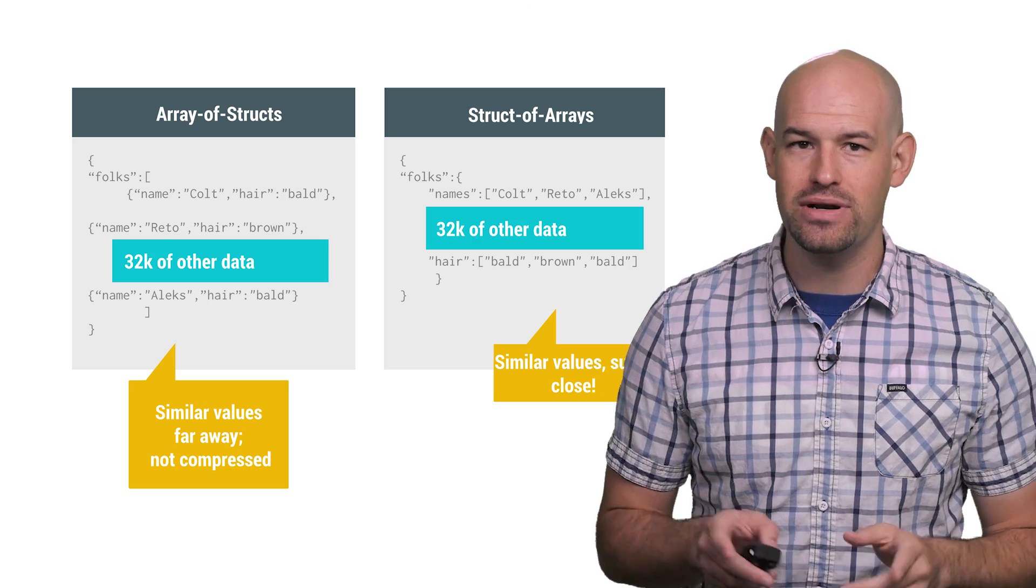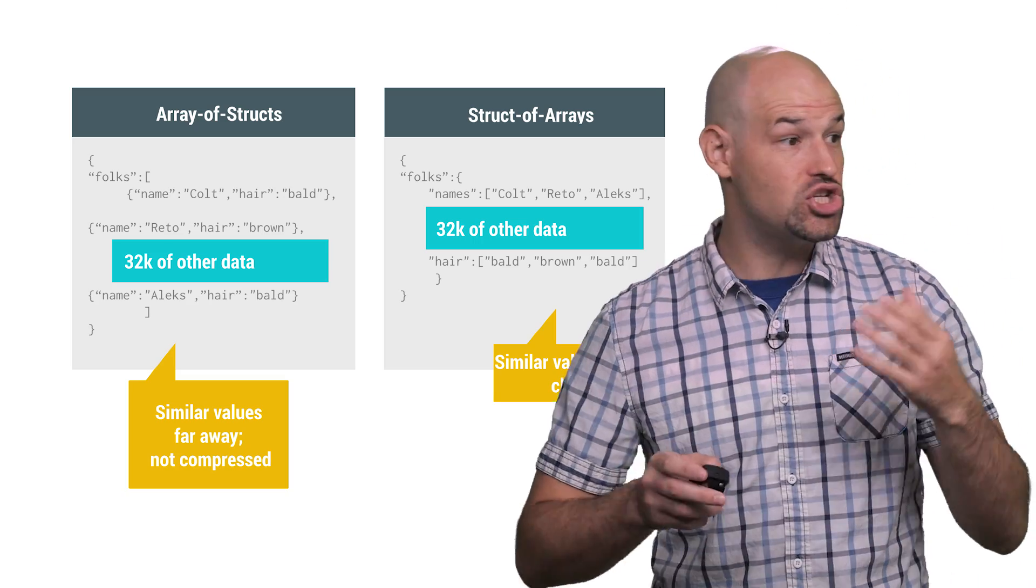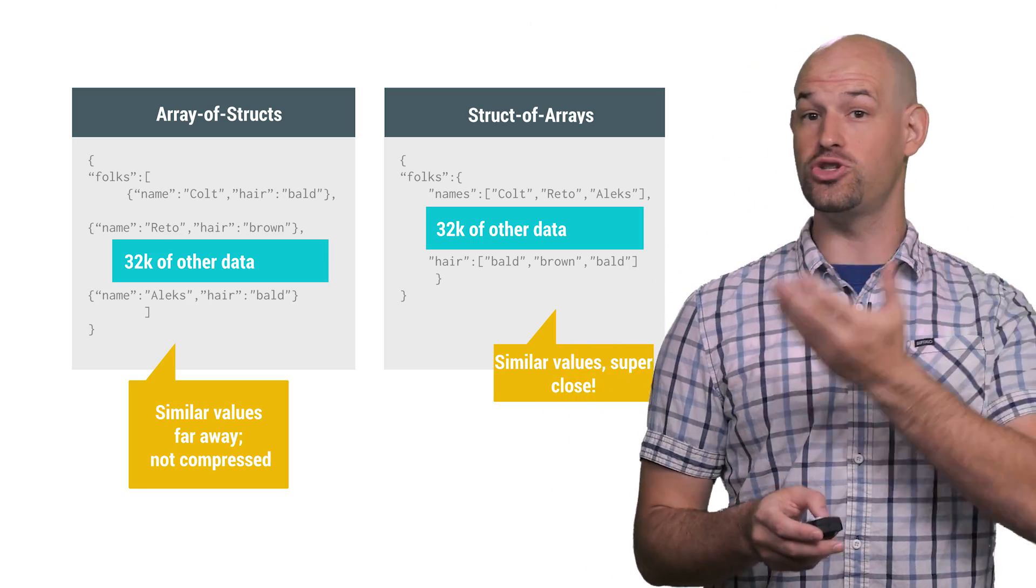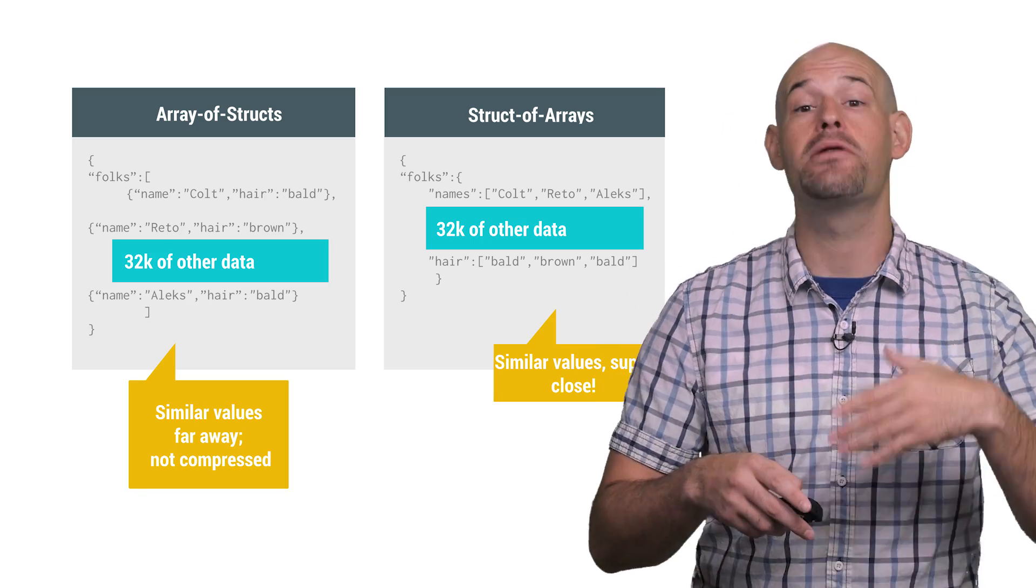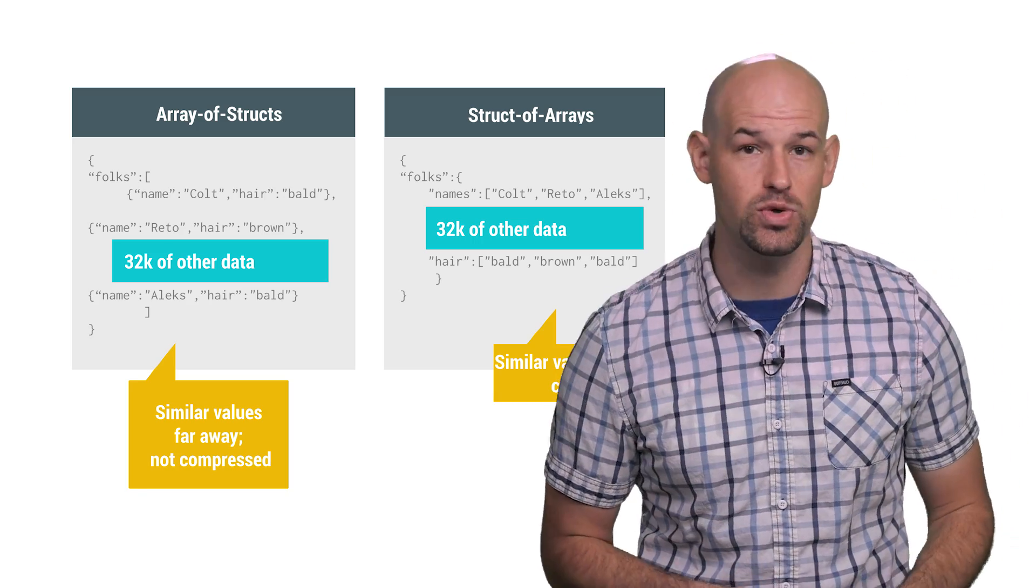Second, similar data types are now contiguous, meaning that the gzip algorithm is going to have a better shot at finding duplicate matches, since duplicates are now going to be closer together and more likely to exist in the 32k window.